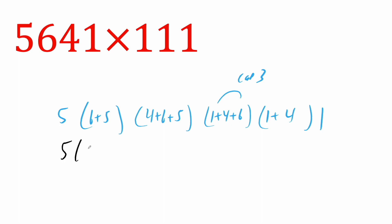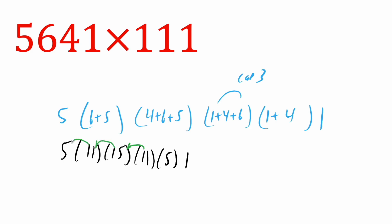Now we can clean it up: five, six plus five is 11, four plus six is 10 and 10 plus five is 15, four plus six is 10 and 10 plus one is 11, one plus four is five, and then we have our one. So we carry the one — this now becomes 16; carry the one, this becomes 12; carry the one, this becomes six. So we have six, this piece becomes two, this five became a six, the one remained, and then these two stay the same: five and one. This right here is our final answer.